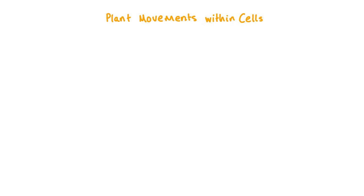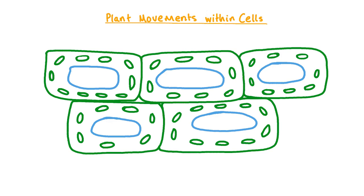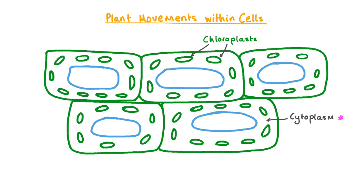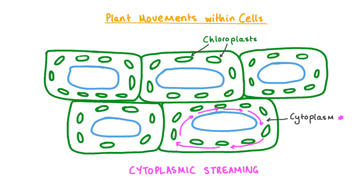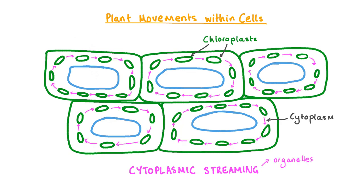Now let's take a closer look at movement at the cellular level. A drawing of typical plant cells in the leaf of an aquatic plant under a high-powered microscope shows subcellular structures such as chloroplasts, the cytoplasm — a fluid in which organelles like chloroplasts are suspended — and the vacuole. A key characteristic of the cytoplasm is that it is in a constant rotational flow in one direction within the cell. This is called cytoplasmic streaming, and it moves organelles, nutrients, and metabolites within the cells of multicellular organisms which cannot move them by simple diffusion.